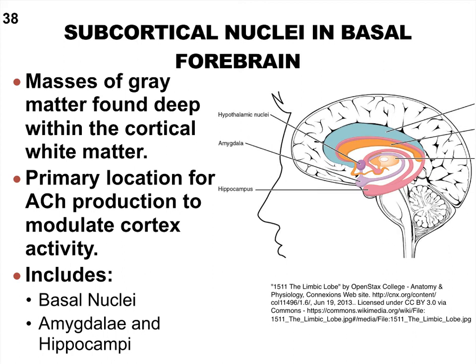We discussed the cerebral cortex in quite a bit of detail last time — the primary functional sensory areas, the primary motor areas, and some association areas. We talked about the prefrontal cortex. We wrapped up by looking at the white matter of the brain, made up of myelinated fibers that can run in different directions — staying within a cerebral hemisphere or interconnecting the two hemispheres via commissures. The corpus callosum and the fornix are examples of commissures.